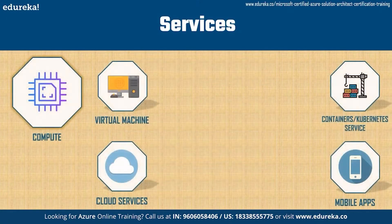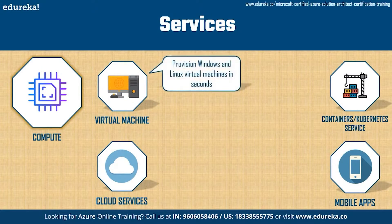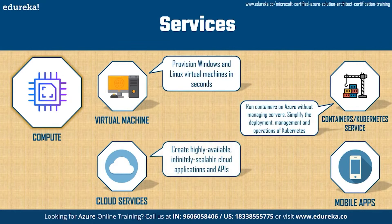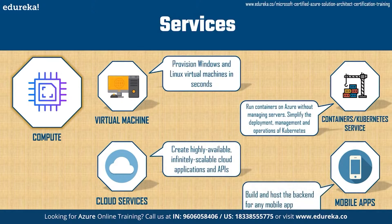The first product John needs is compute. He can use this to deploy and manage virtual machines, containers, and batch jobs, as well as support remote application access. Compute resources in the cloud can be configured with either public or private IP addresses depending on whether the resource needs to be accessible to the outside world. Services within the compute category include virtual machines, containers, Kubernetes service, cloud services, and mobile apps.